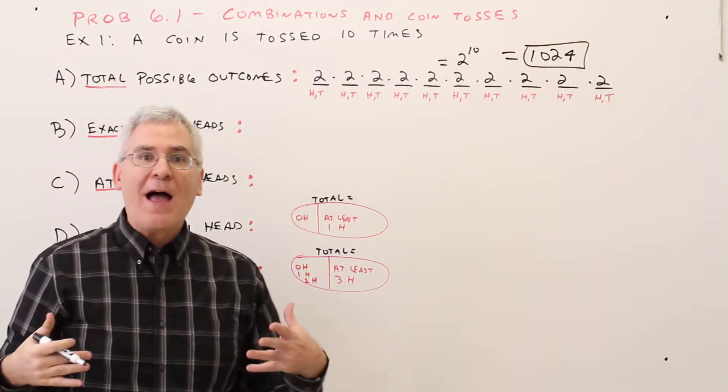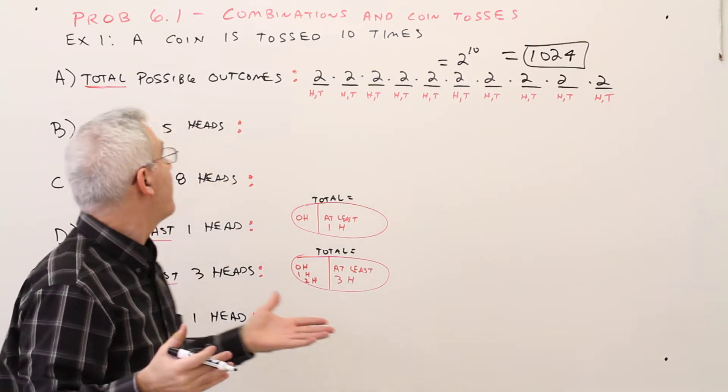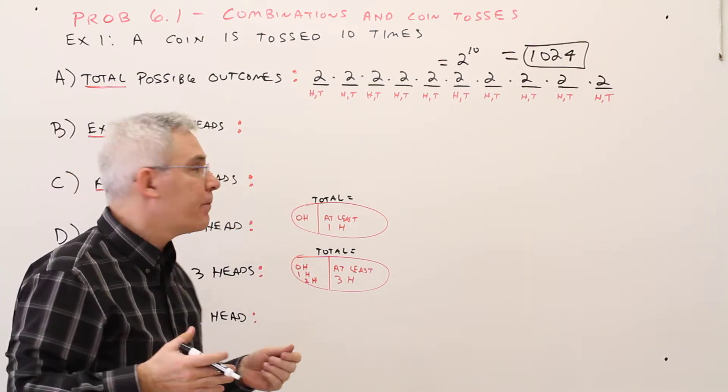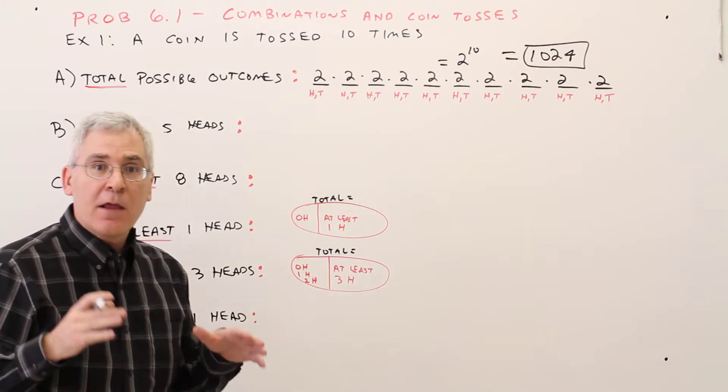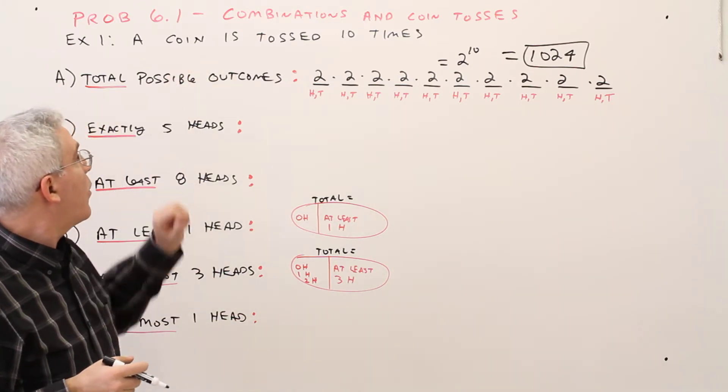So there's 1,024 possible different ways to have outcomes. Part B, now again, we're tossing the coin 10 times.